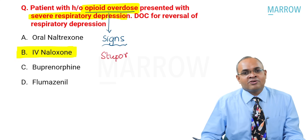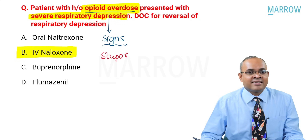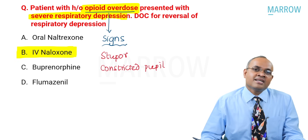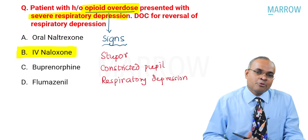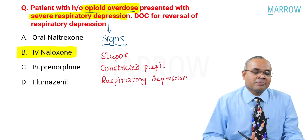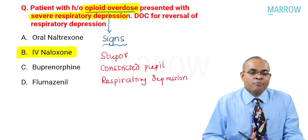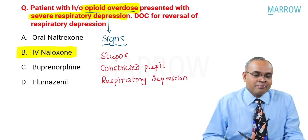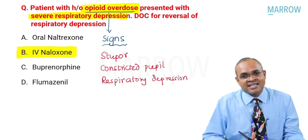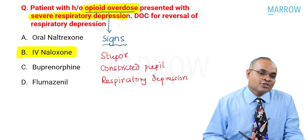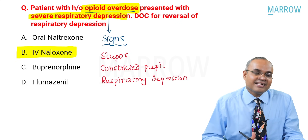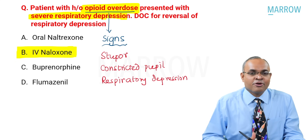The signs of opioid overdose commonly are three important signs: stupor, constricted pupil, and respiratory depression. These three signs give you a clue that most probably the patient is in opioid overdose. Many times the patient is unconscious and won't tell you what overdose he has done, so when you look at the pupil, you might get an idea that it could be opioid overdose.